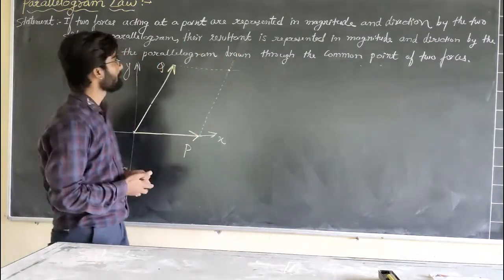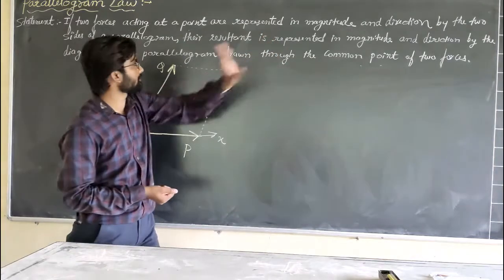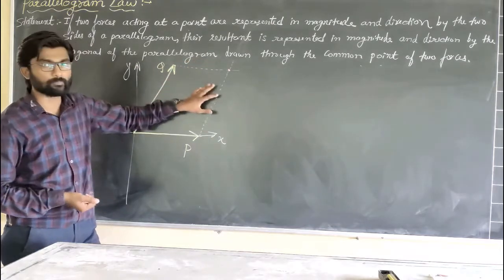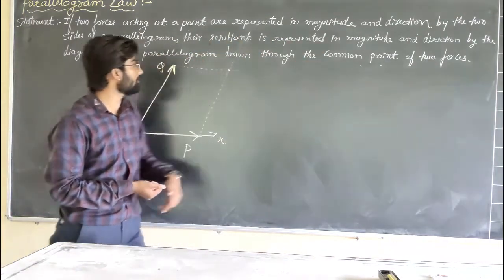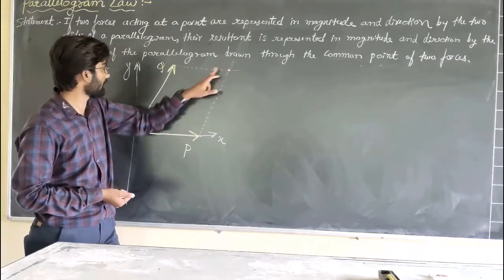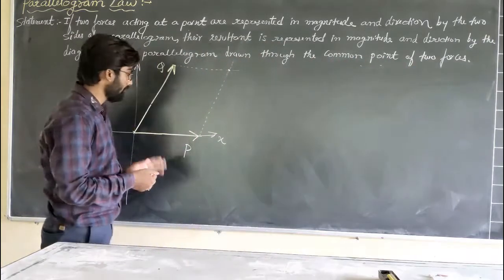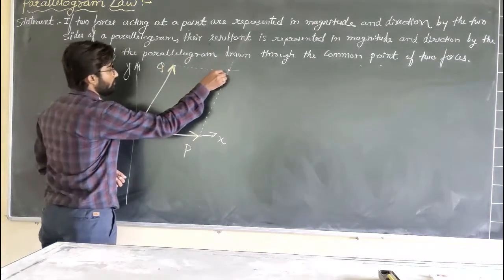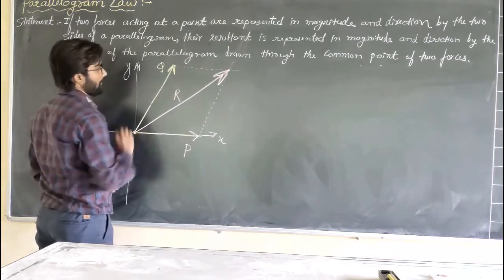According to the statement, if two forces are acting at a point represented as two sides of a parallelogram, then the resultant is represented in magnitude and direction by the diagonal. A parallelogram has two diagonals; the diagonal that comes out from the common point of the two forces gives the resultant direction. Since this is the common point of forces P and Q, this diagonal is your resultant R.